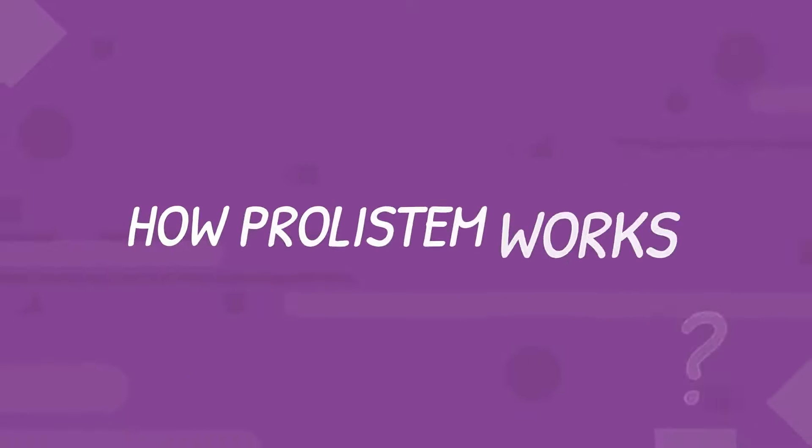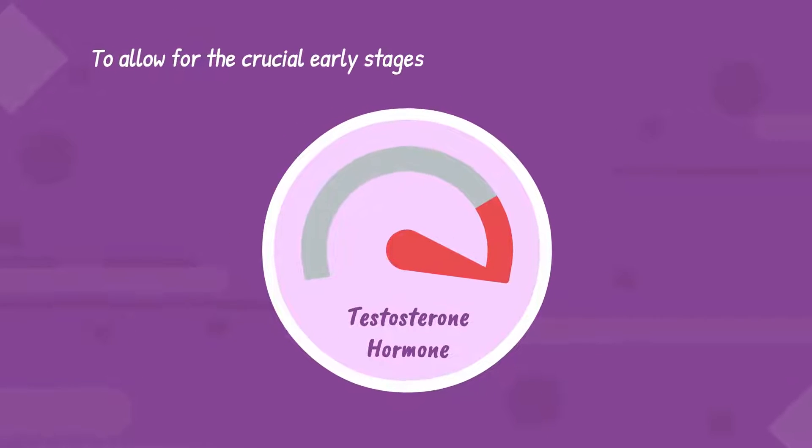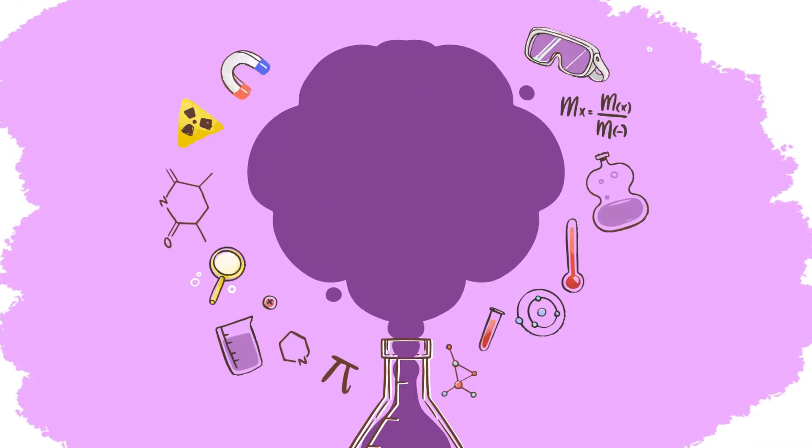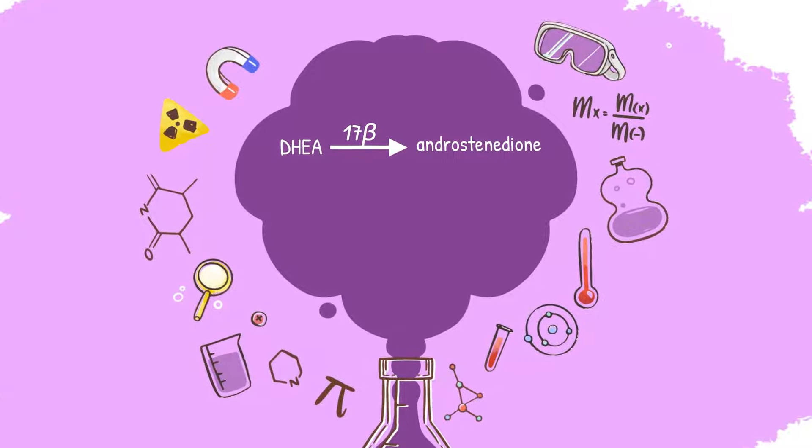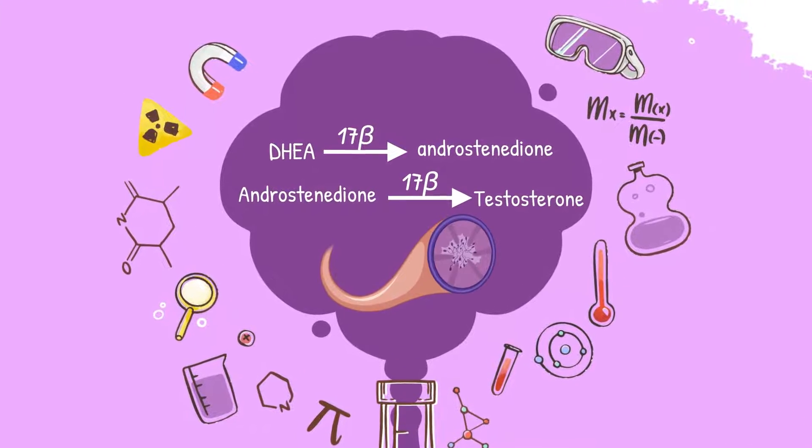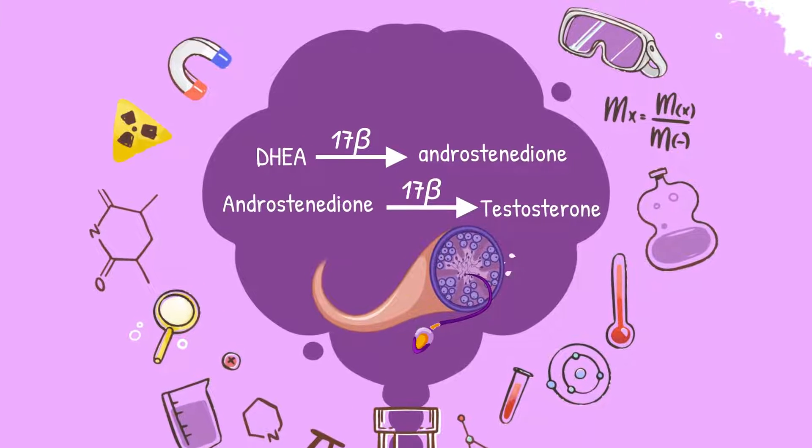Prolistem works by temporarily reducing testosterone levels to allow for the crucial early stages of spermatogenesis to take place. We do this using our special active component of licorice, called glycyrrhizic acid. This acid blocks the 17-beta-hydroxysteroid dehydrogenase, which catalyzes the conversion of androstenedione to testosterone.